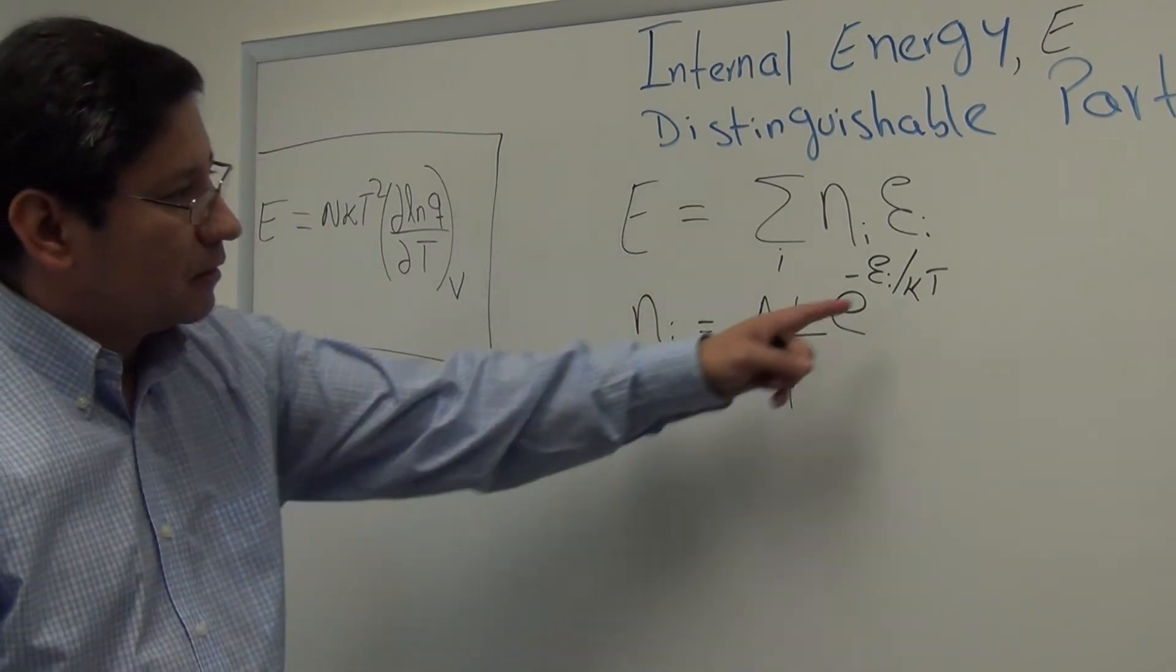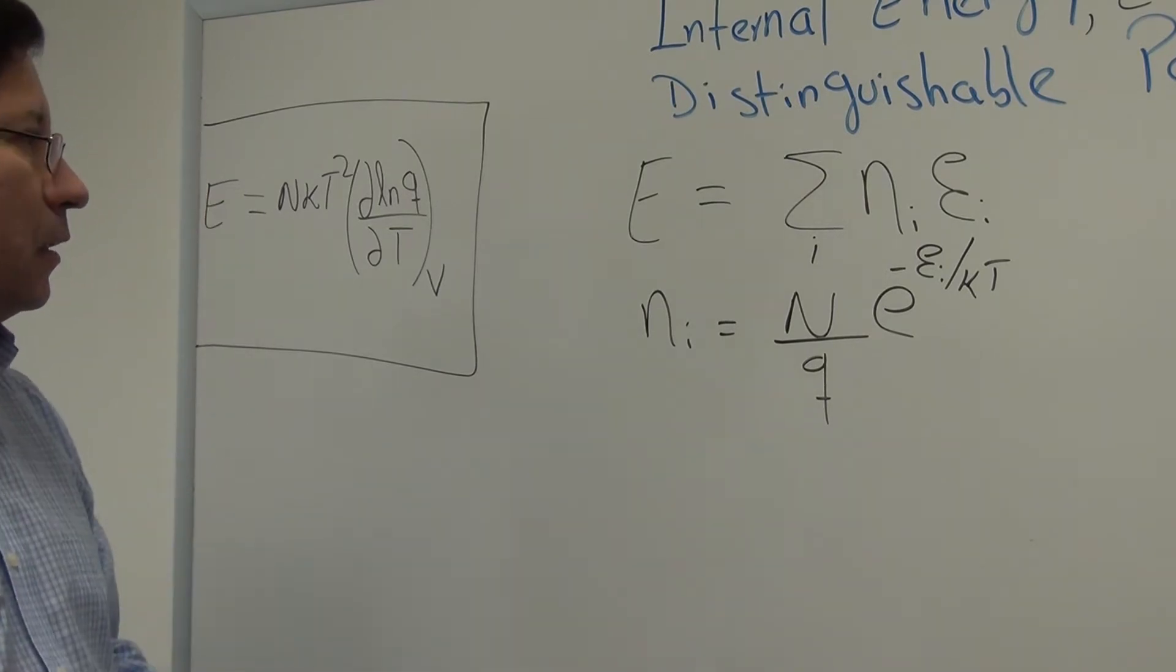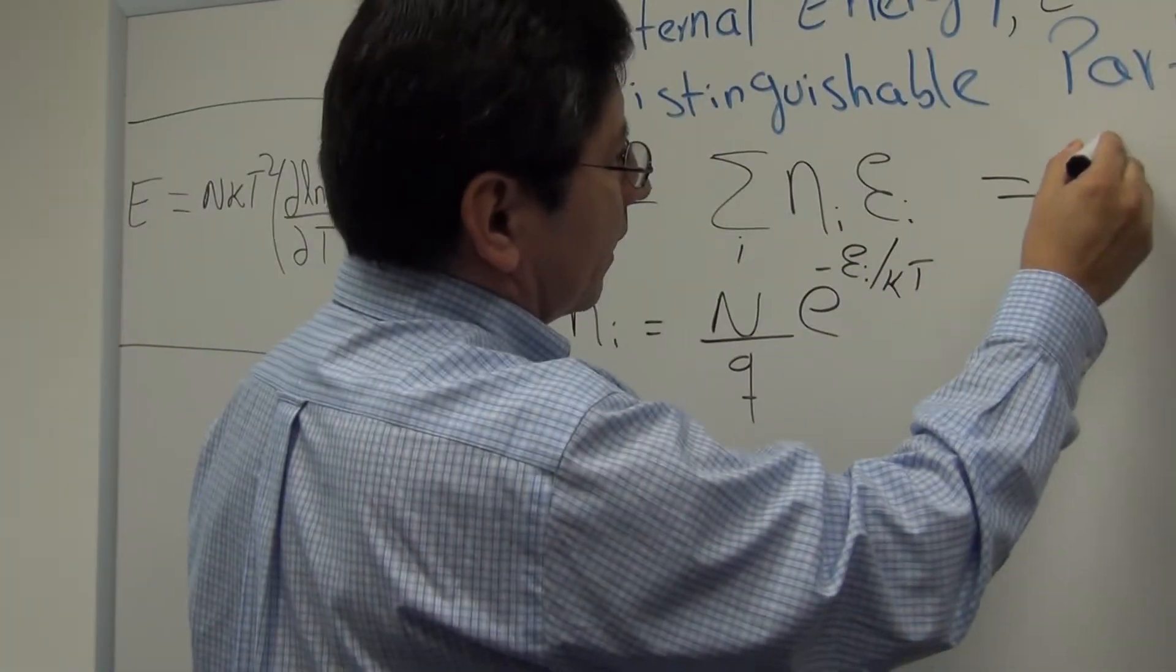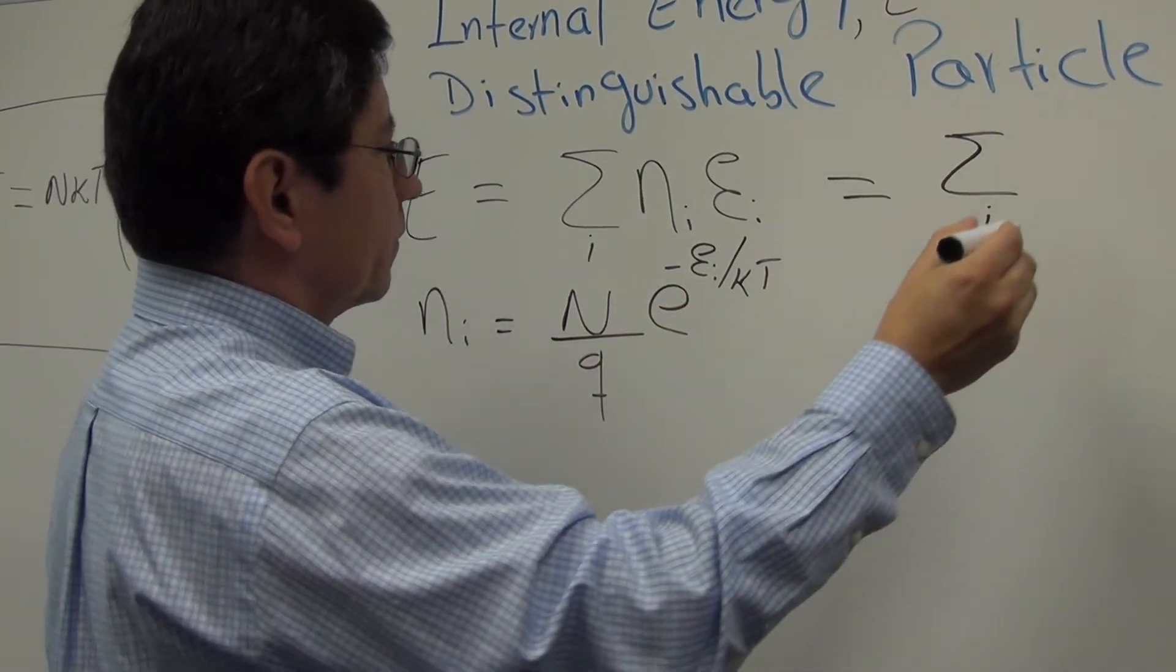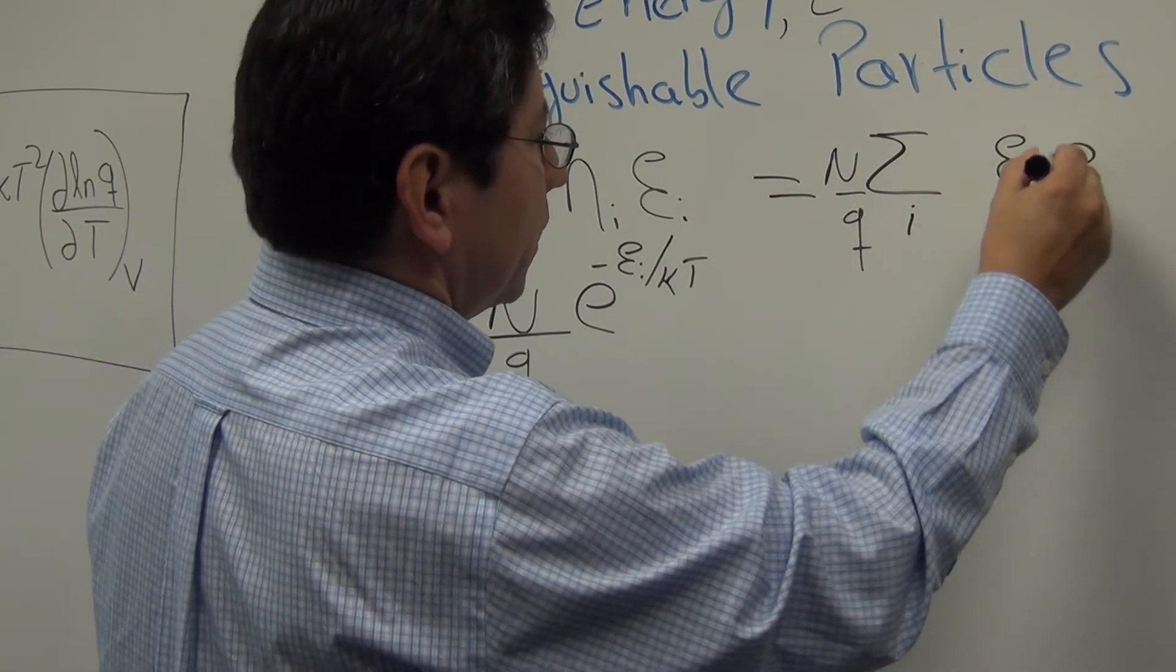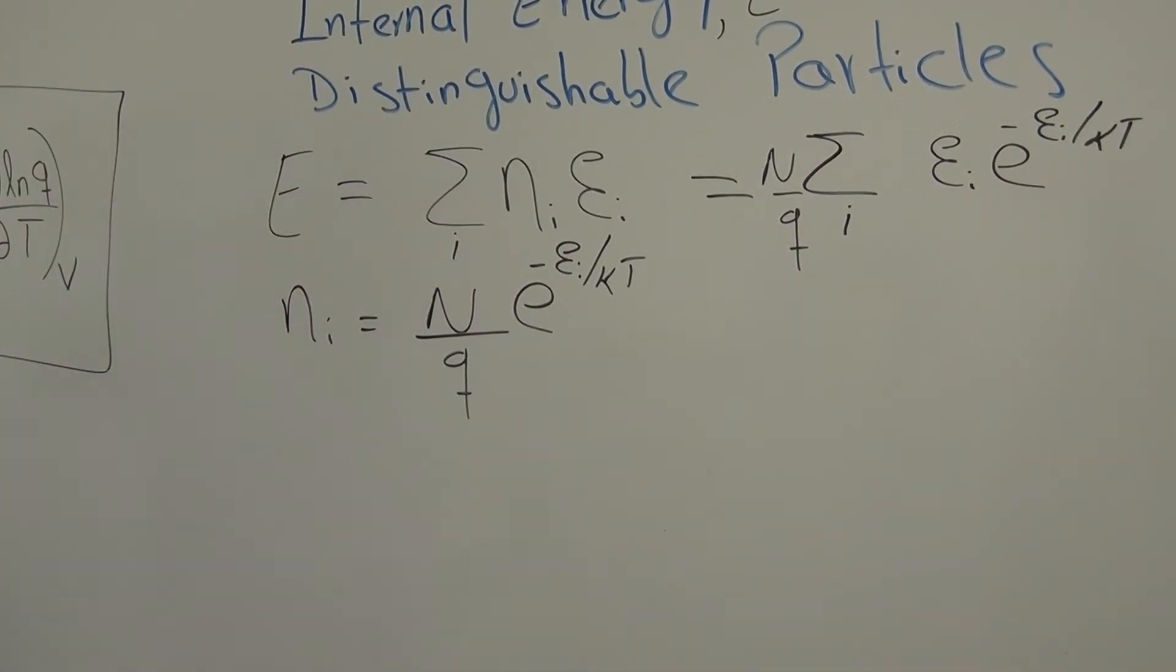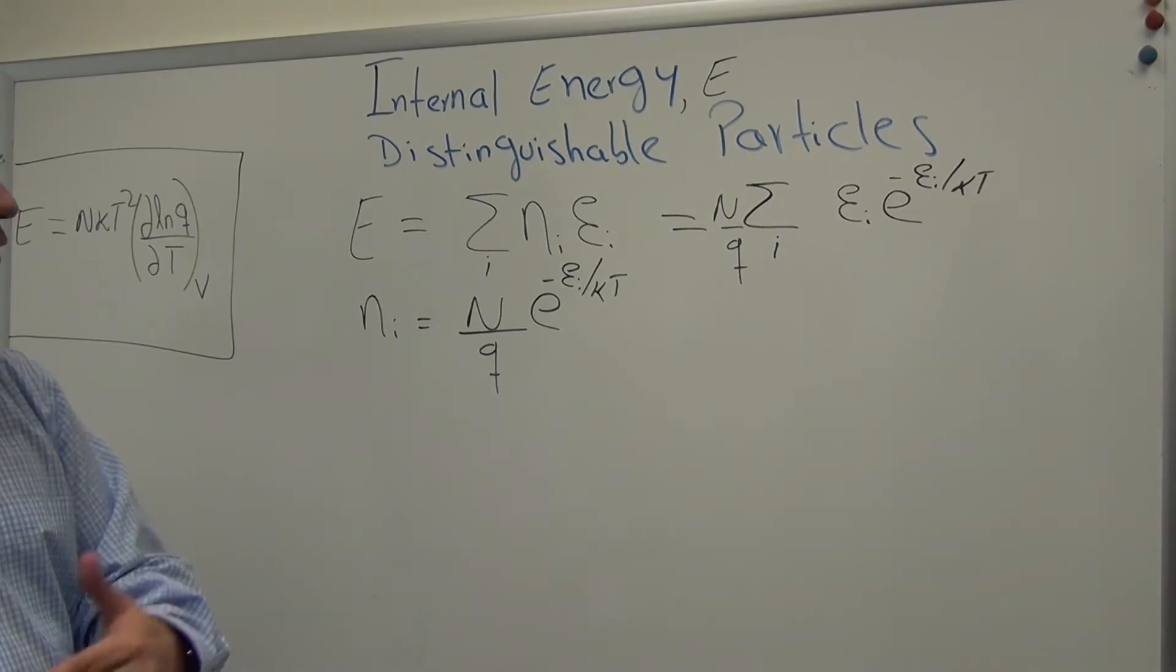Again, K is Boltzmann constant, T is temperature, absolute temperature. E sub I is the energy associated with that state. So if we use this definition for N sub I, then we can see that this NiEI can be written as N over Q outside the summation symbol, then we have E sub I, E minus EI over KT. There is an implicit assumption here that we're going to correct in a second. The assumption is that the energy states are non-degenerate. In general, though, the energy states are degenerate.